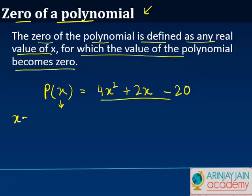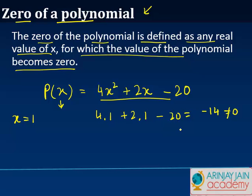So let's say I put in x is equal to 1. I get 4 times 1 squared which is 1, plus 2 times 1 minus 20. So I get 4 plus 2, which is 6, minus 20 gives me minus 14. But this value is not equal to 0, so we cannot say that x equals 1 is a zero of this polynomial.